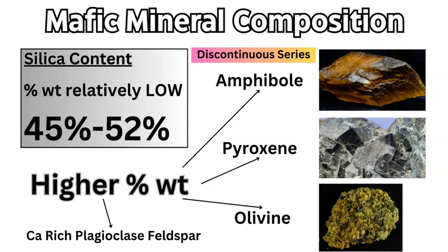On the continuous side, between calcium, sodium, and potassium in the feldspar composition, the plagioclase involved with mafic rocks is the calcium-rich variety, forming at the same high temperatures as olivine. As magma cools, calcium gets replaced by sodium and then potassium, but this only occurs in different rock types. In mafic rocks, we are looking at just the calcium-rich feldspar.